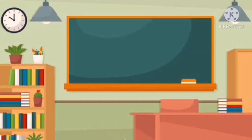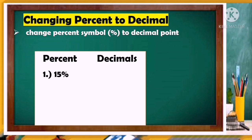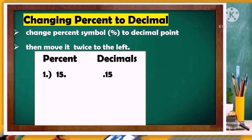Did you know there's an easier way to change percent to decimal? First, change the percent symbol to a decimal point. For example, 15 percent — remove the percent symbol, place a decimal point, then move the decimal point twice to the left: one, two. The answer is 0.15. You can also put a zero before the decimal point. It's easier, right?